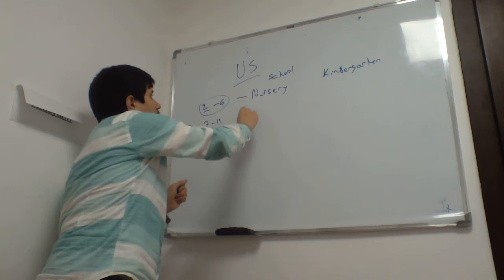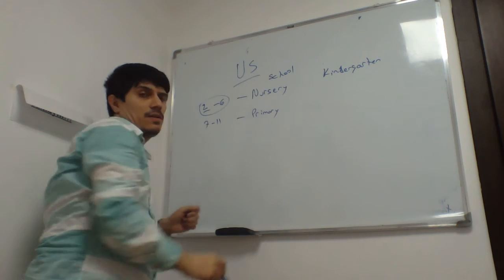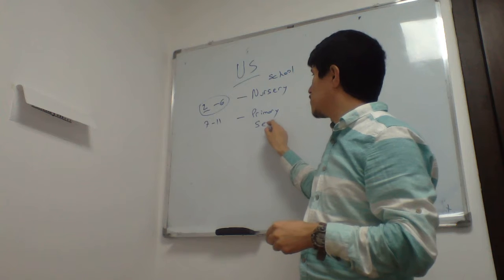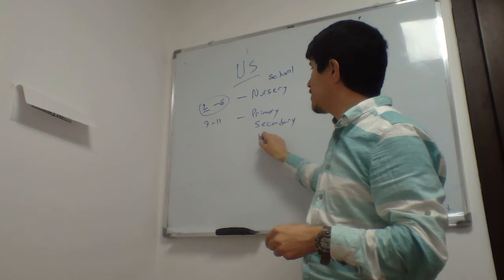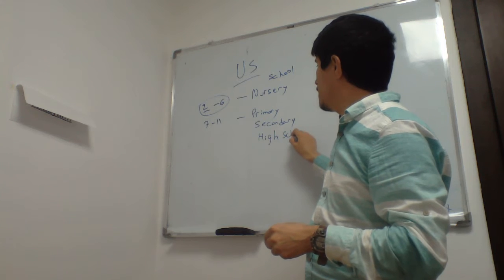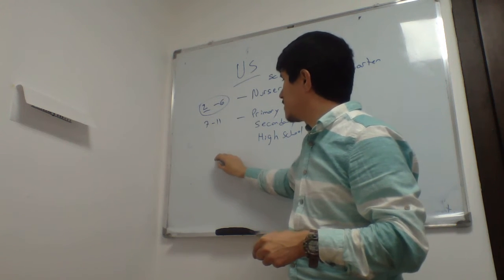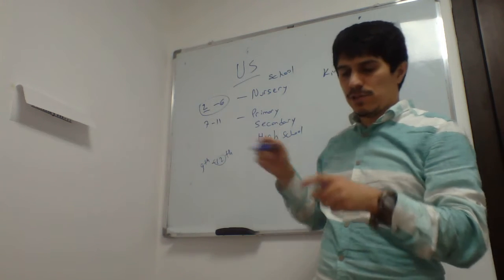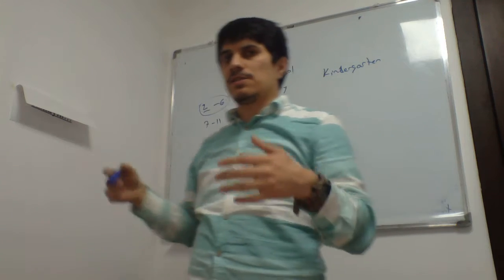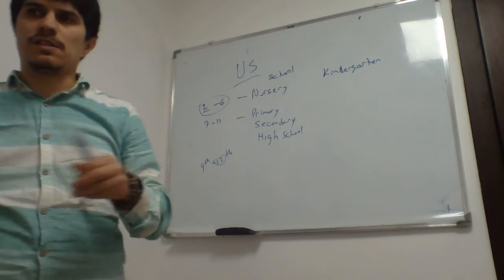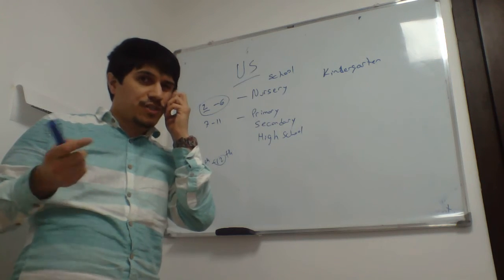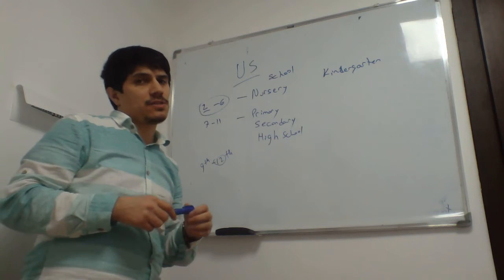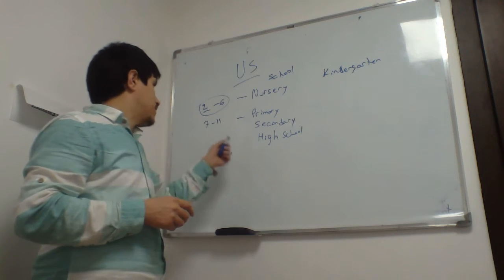Ages 7-11 we have the primary school, then secondary school, and then we have the high school, right? It makes 12th grade, 9th to 12th grade high school. That's why in the United States and some countries there are 12 years of education, but in Turkey and Azerbaijan or Russia there are 11 years of education.